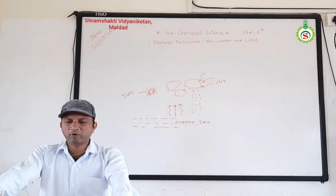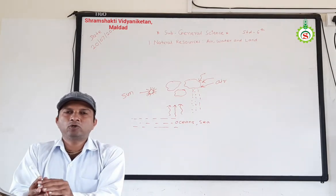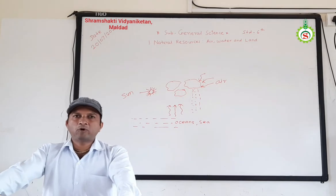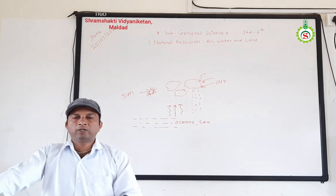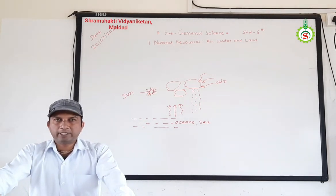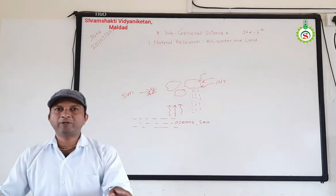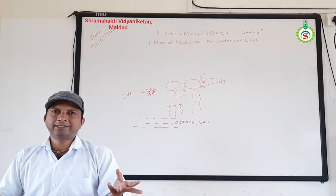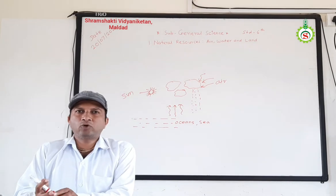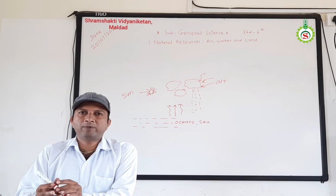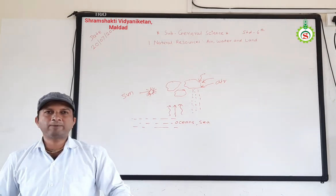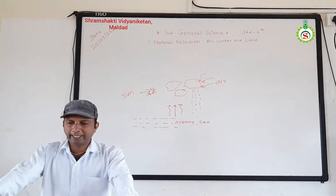Due to the uncontrolled use of water and increasing population — day by day the population of the world goes on increasing, for example in China and India, the most populated countries — all the human population uses water for their daily needs. As population increases, a large number of industries are also established, and industries require water in large quantities. Due to increasing population and industrialization, more and more water is used, and therefore there is a serious problem of water scarcity, meaning there is less availability of water on the land.